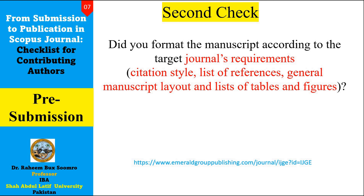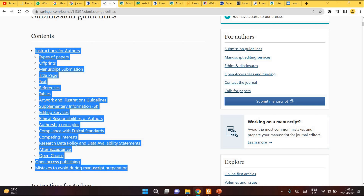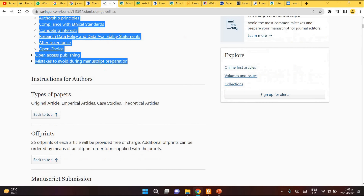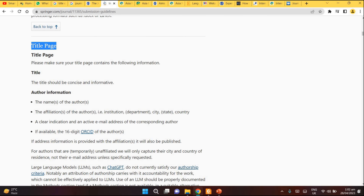The second check is about journal requirements: citation style, list of references, manuscript layout, and list of tables and figures. This is very important. Your paper may be rejected, returned, or not submitted because you have not followed all the formatting guidelines. Different publishers have different format requirements. For example, the Springer journal 'International Entrepreneurship and Management Journal' has format guidelines according to which you must prepare your document before submitting.